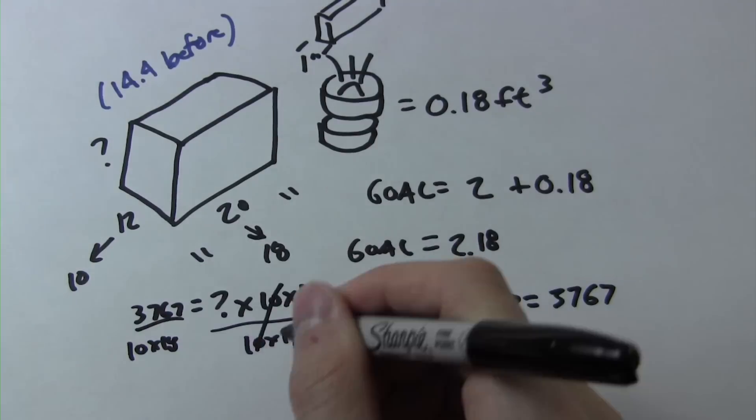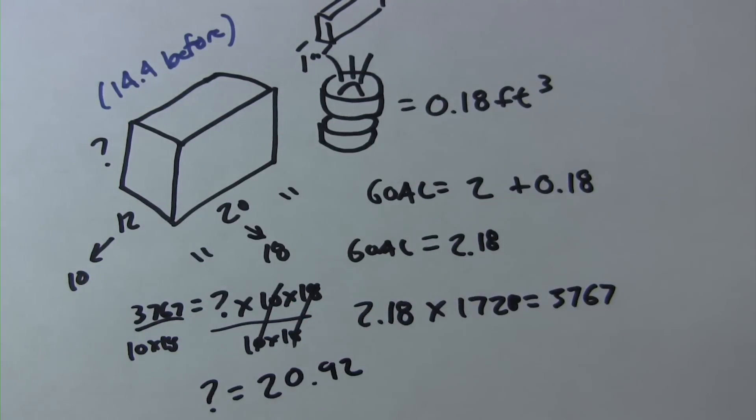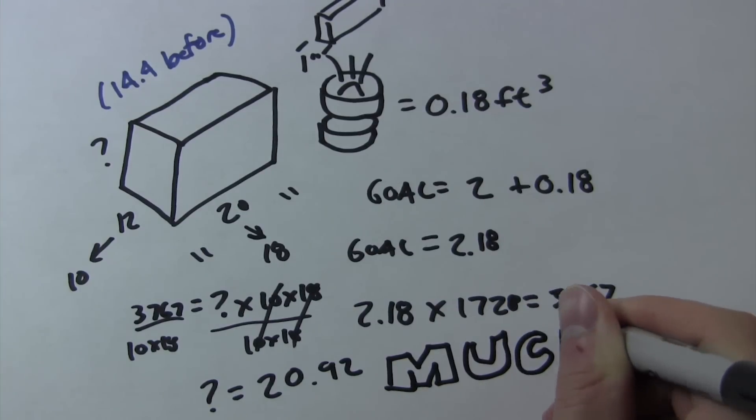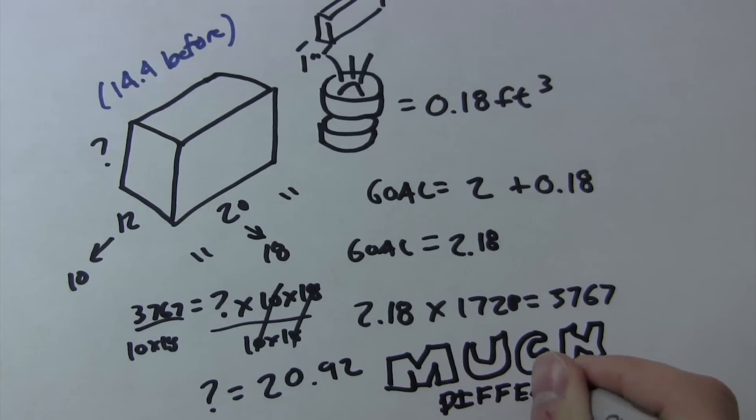In fact, we come up with 20.92 inches for the height. This goes to show just how important it is to take into account everything that can affect the volume of our enclosure. Something that the online calculators won't do for you.